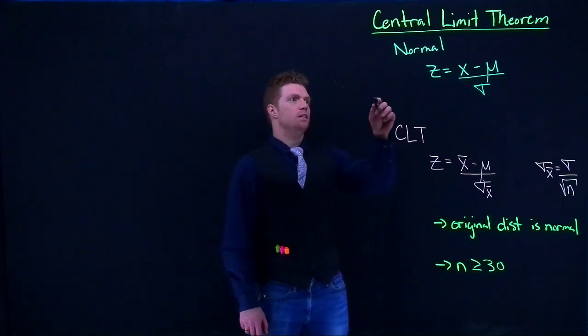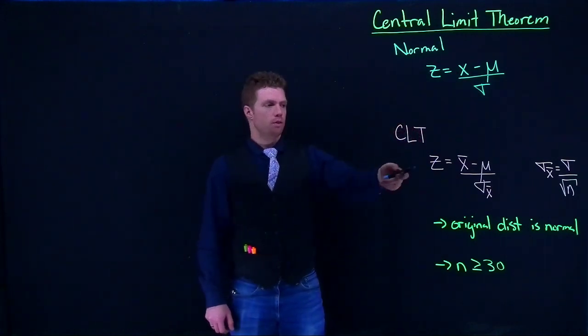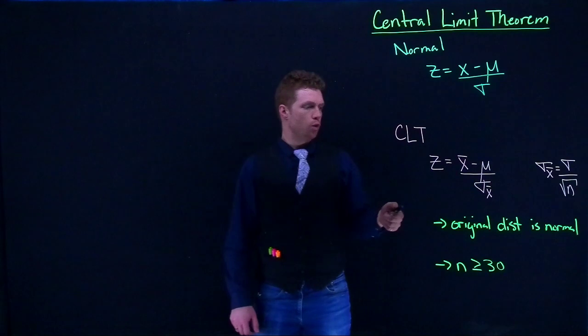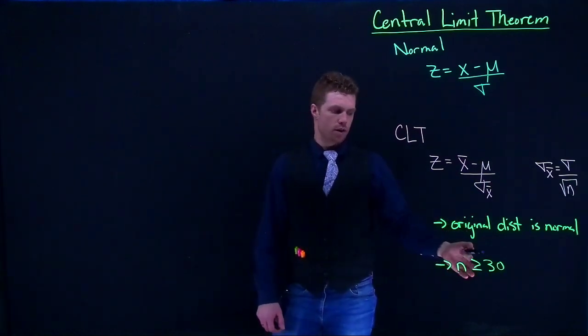Over here we've seen that we've got just a regular normal distribution, and then we know from the central limit theorem that these sets of equations will work if the original distribution is normal or if the sample size is greater than or equal to 30.